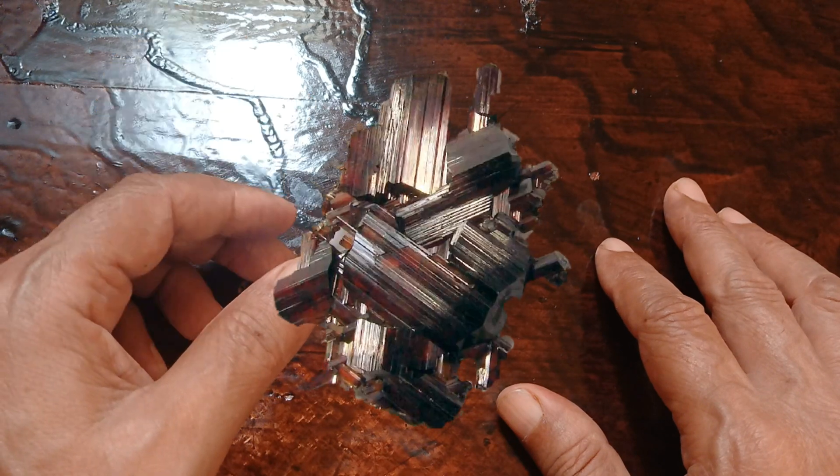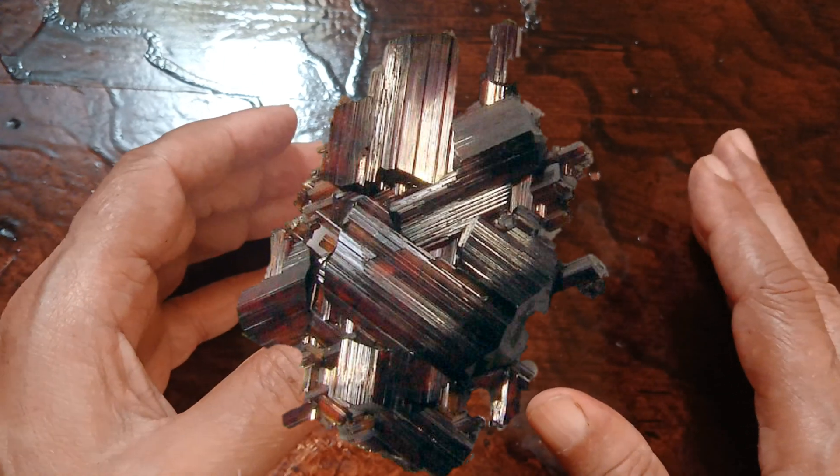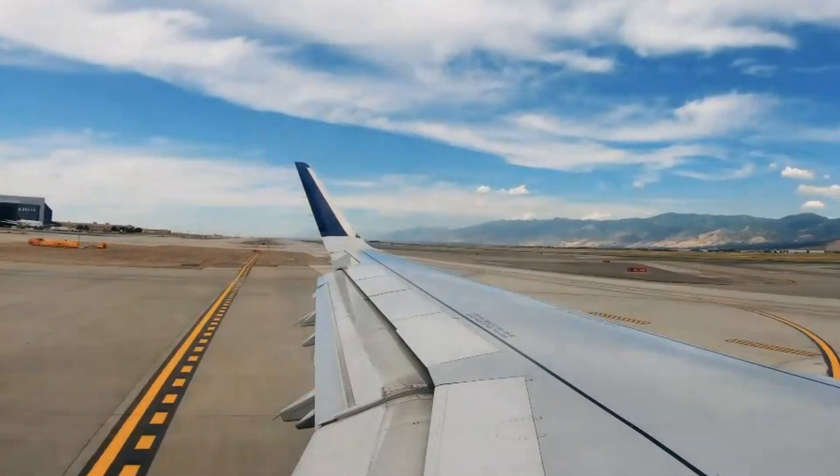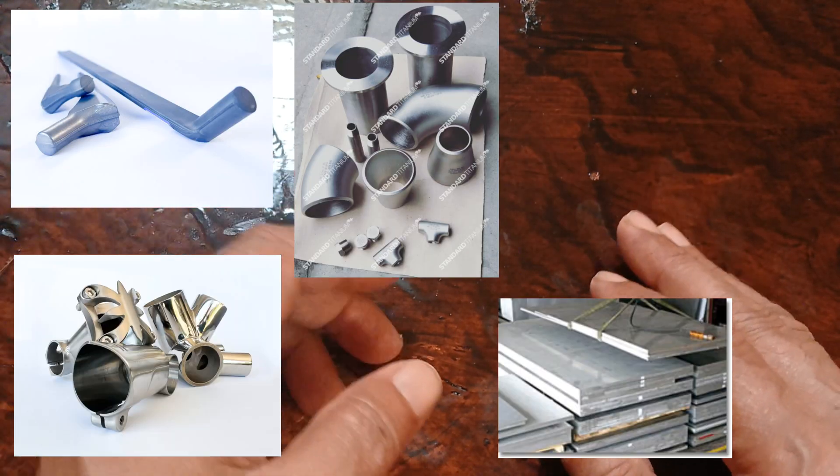Rutile can be red, red-brown, yellowish, or black. The streak test color for titanium is light brown. Titanium is commonly used in aerospace, medical implants, and other industrial applications.